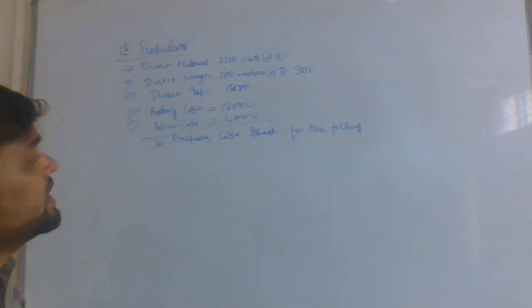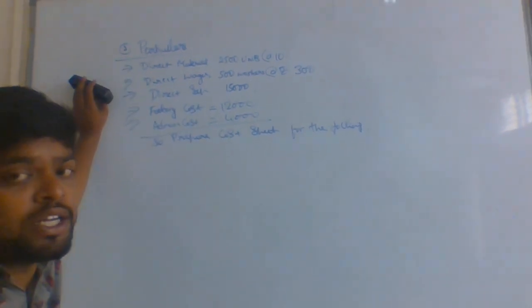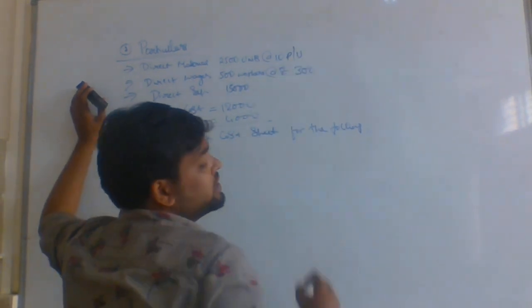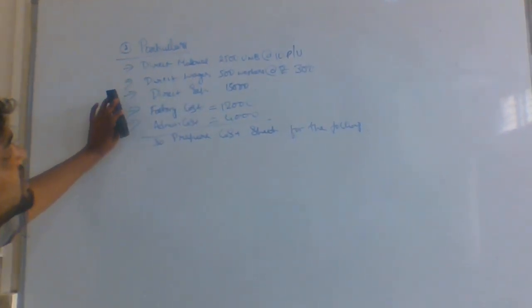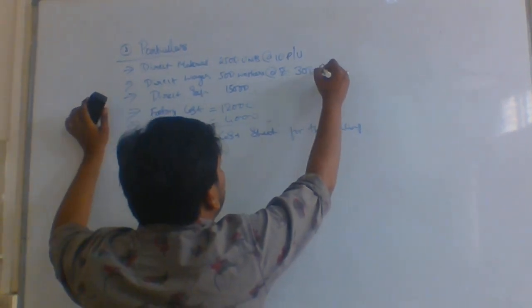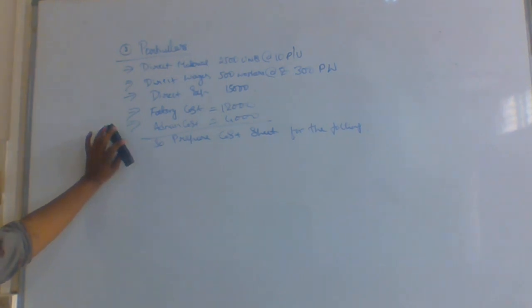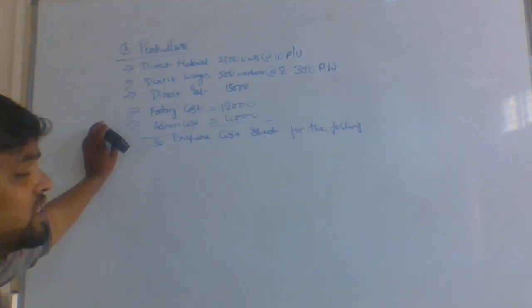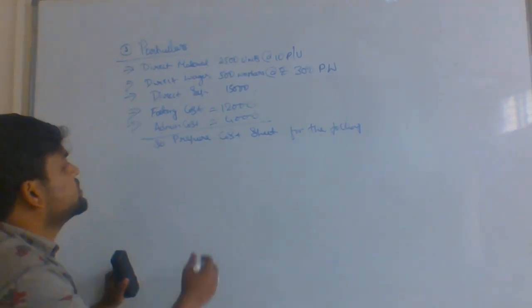They are given this sub-question as: direct material — 2500 units at rupees 10 per unit. And direct wages — 500 workers at rupees 500 per worker. Next, direct expenses — they are given 15,000 directly. Factory cost — they are given. Administration cost — they are given 4,000. Let us discuss one by one.